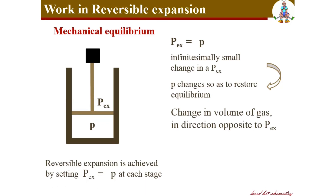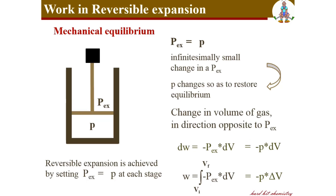In the equation for work, the external pressure can be replaced with the system pressure p — only in the case of reversibility can you equate the external pressure with the system pressure. This is an important point. Performing the integration gives the total work as the integral of minus p dV over the change in volume, which represents the total work done in reversible expansion.